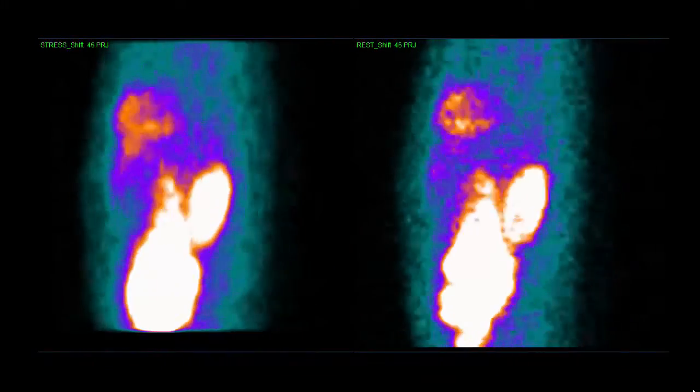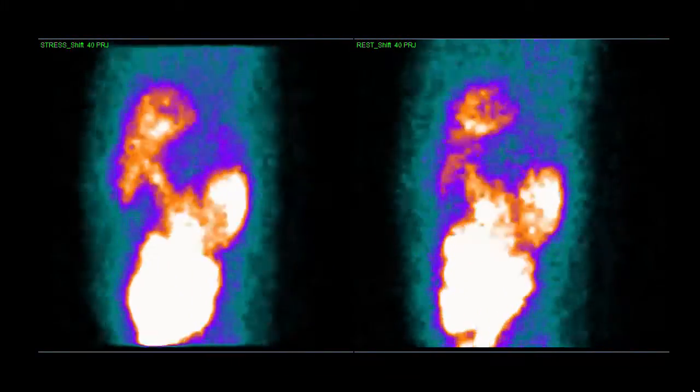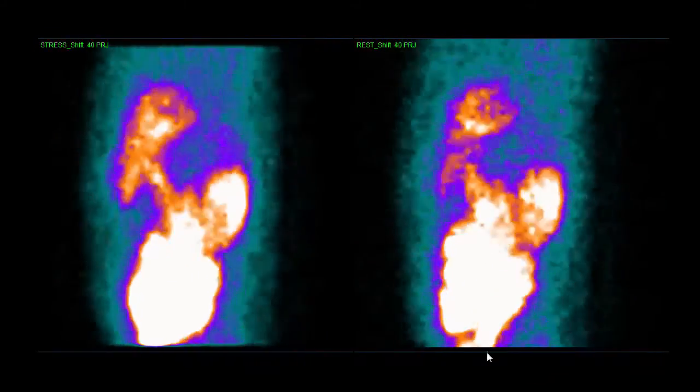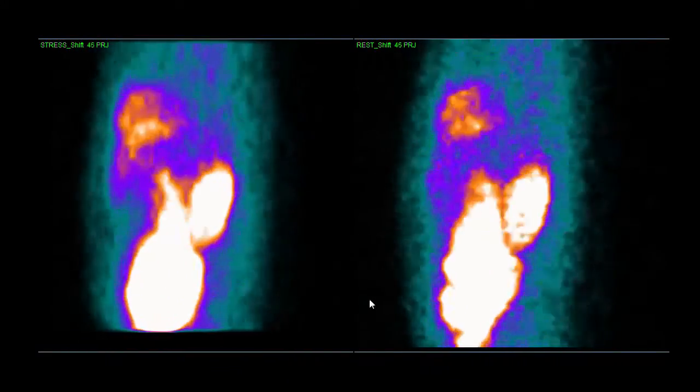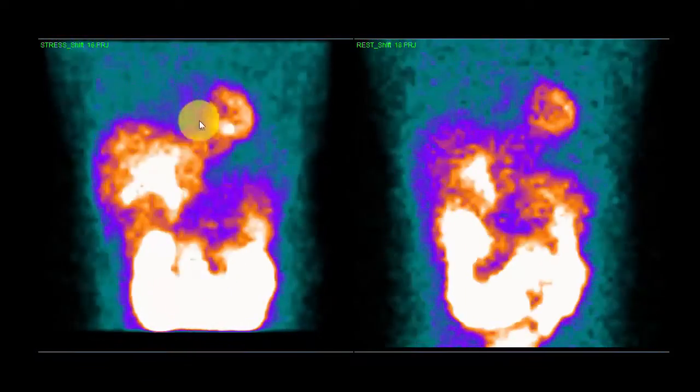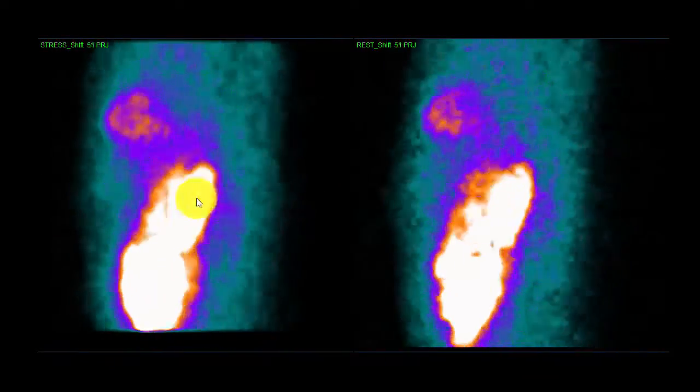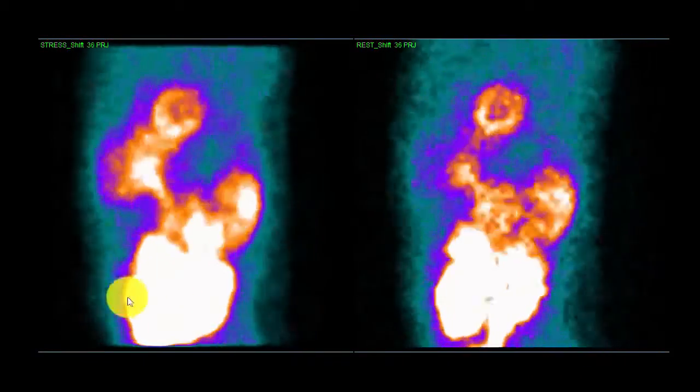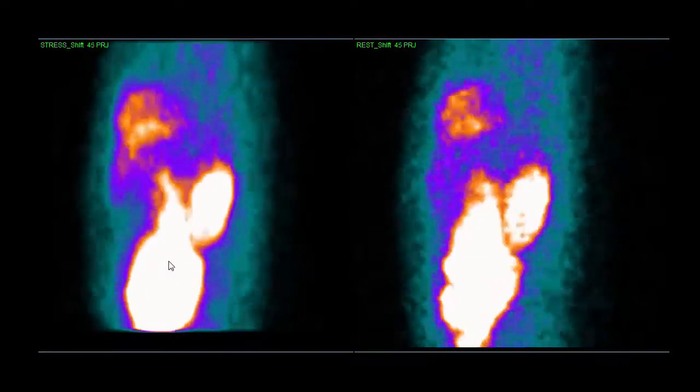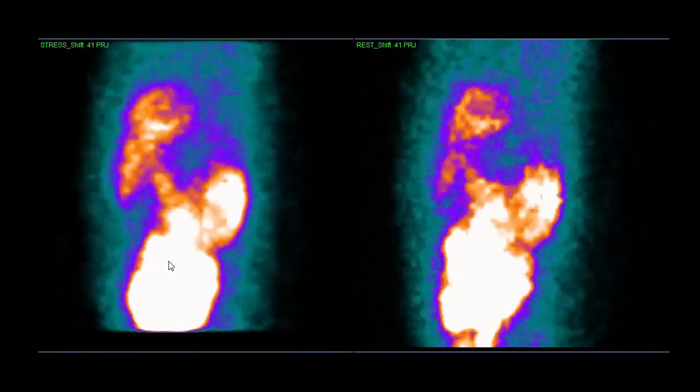In nuclear medicine we inject our patients with radioactive tracers, and these tracers will go somewhere in the body. This tracer goes to the heart, which is what we want to look at, but it also goes to other organs. This is the heart at the top, these are the kidneys at the back, this is the small bowel at the bottom, and this is the liver. We're not interested in these other organs, we're only interested in the heart.